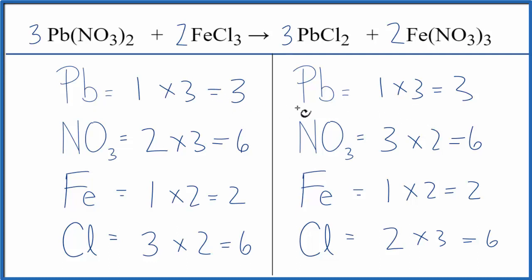This equation is balanced. So when you see something like a nitrate ion that appears on both sides, you can count it as one item. That makes the balancing a lot easier, and you're less likely to make errors.